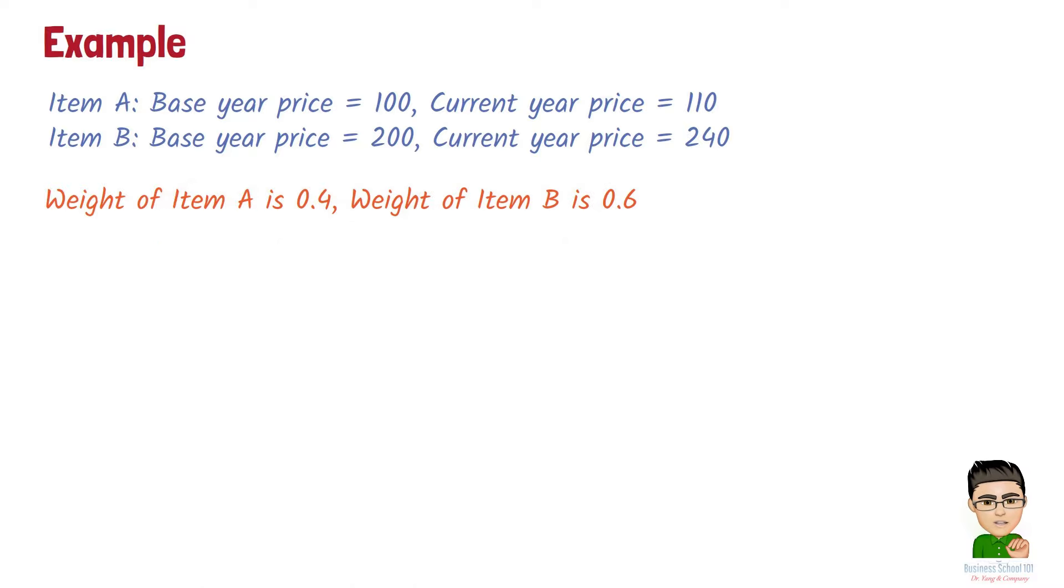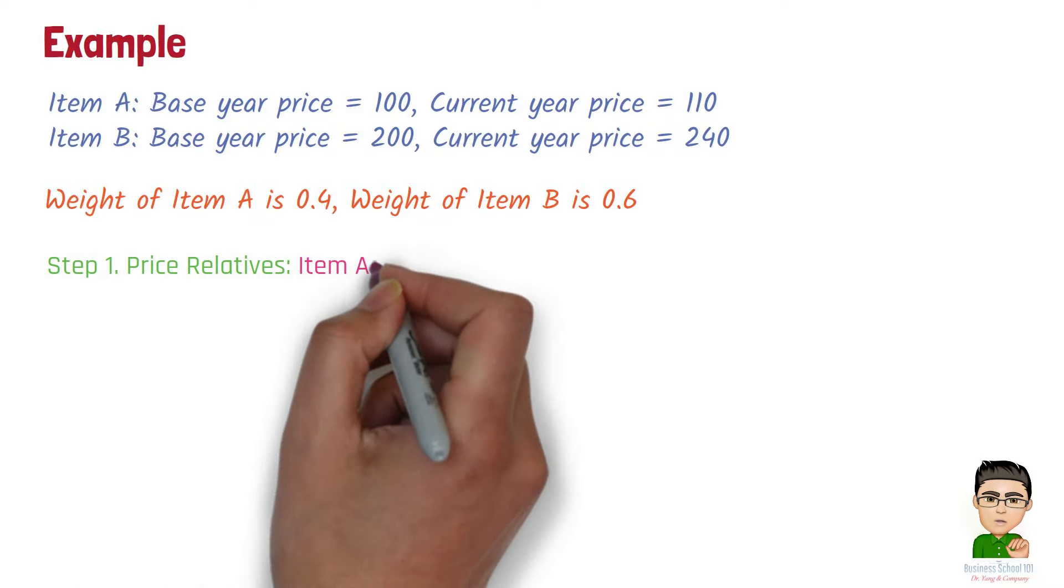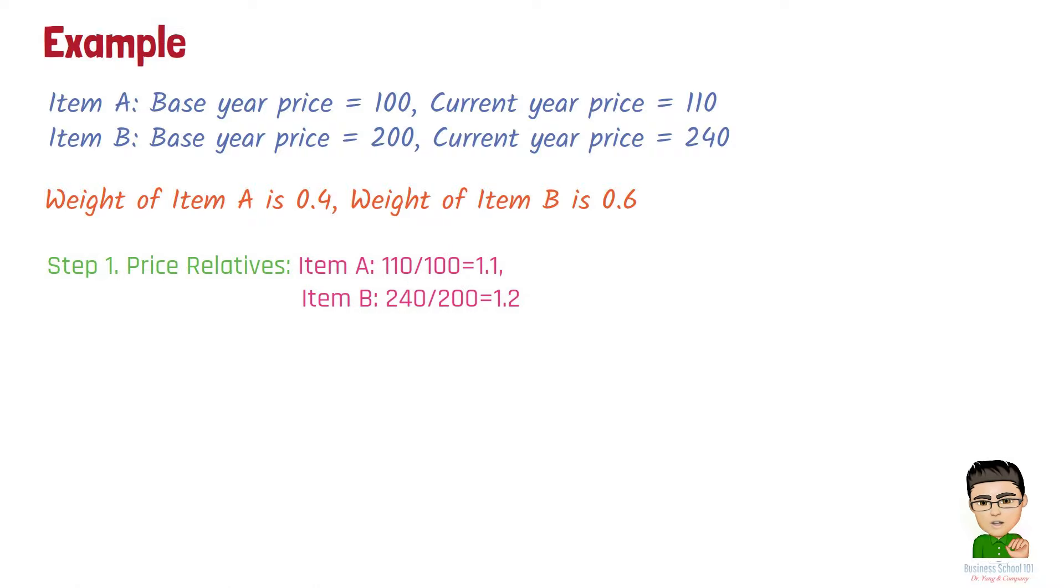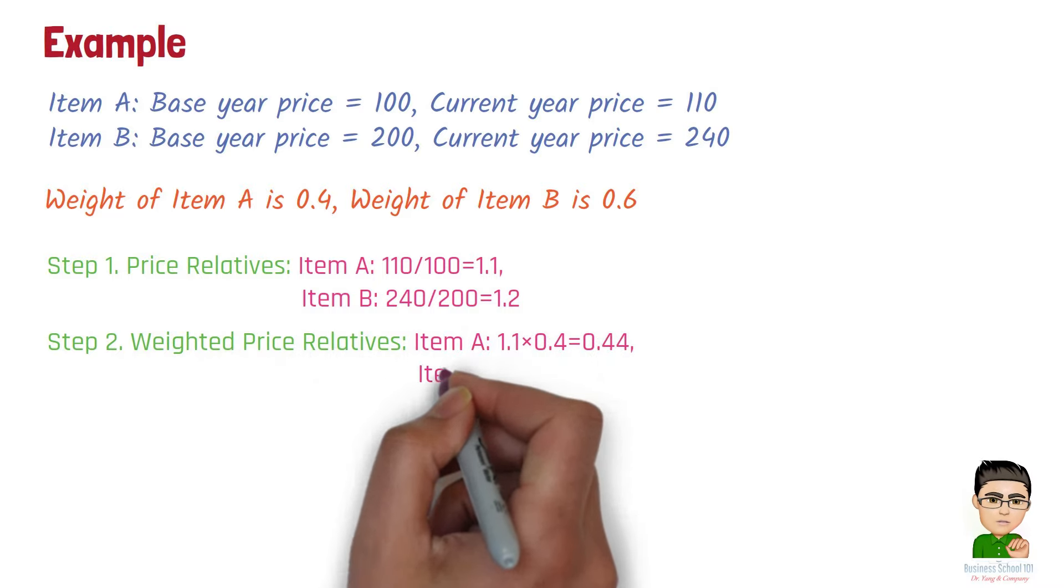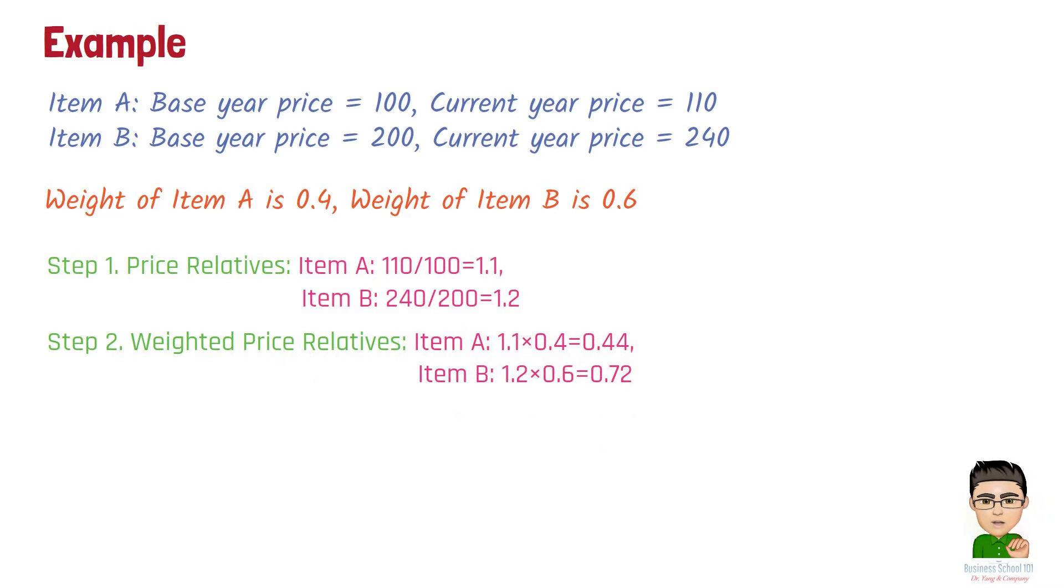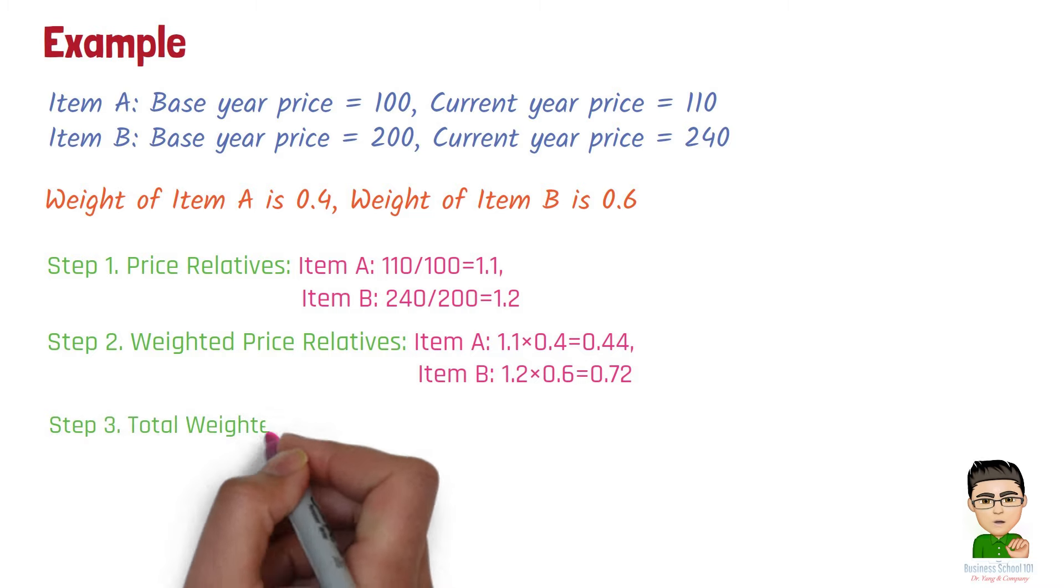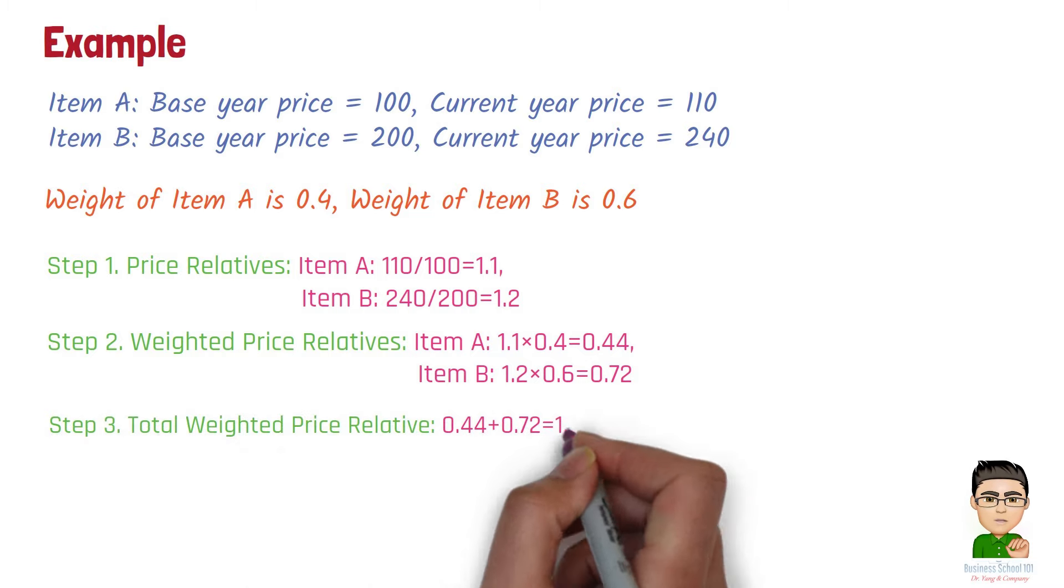So there are four steps to calculate the CPI. Step 1. Price relatives. First, we use current year price divided by base year price. Step 2. Weighted price relatives. Now we use the above price relatives times their respective weights. Step 3. Total weighted price relative. Now we add the weighted price relatives altogether.